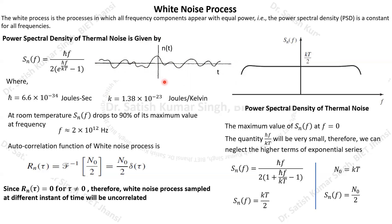The power spectral density of thermal noise is given by the expression: S_N(f) = (h̄f) / (e^(h̄f / kT) − 1), where h̄ = 6.6 × 10⁻³⁴ joules per second is the reduced Planck constant, and k is the Boltzmann constant in joules per kelvin.